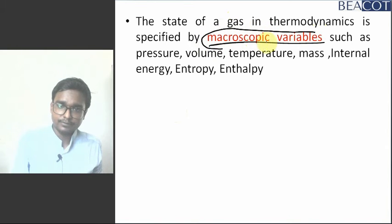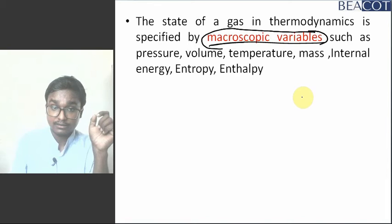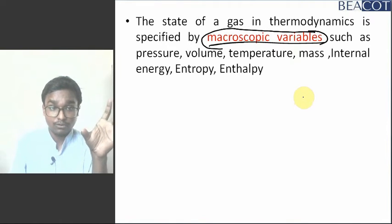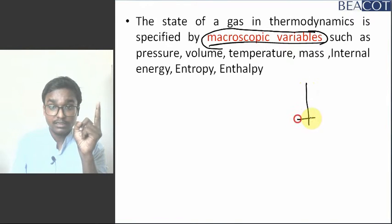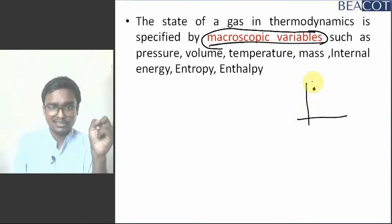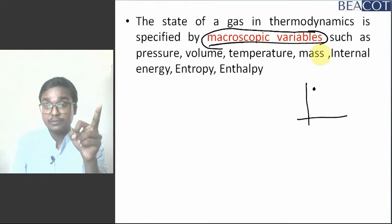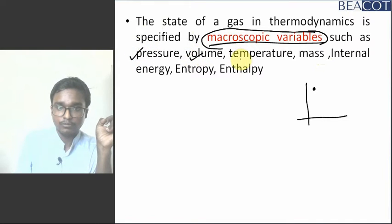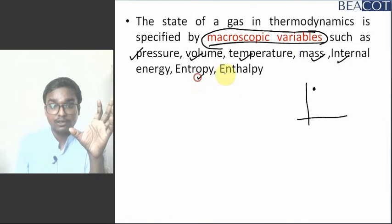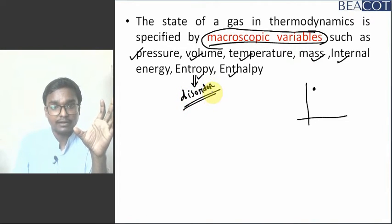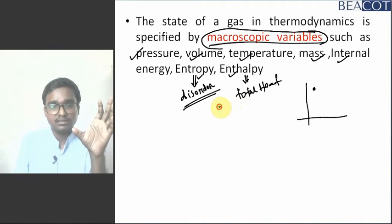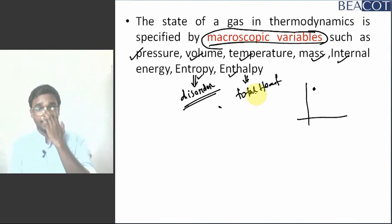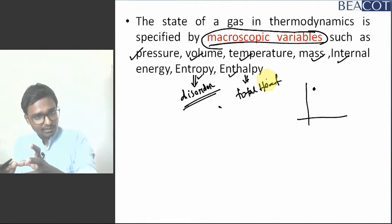What is macroscopic variable? The state of a gas in thermodynamics is specified by macroscopic variables. State means whether it is in liquid, solid, or gas state — or its situation in a coordinate. The state is specified by variables such as pressure, volume, temperature, mass, internal energy, entropy, and enthalpy. Entropy is the disorderedness of molecules. Enthalpy means the total heat content. Internal energy means how much energy is there within a gas or liquid.